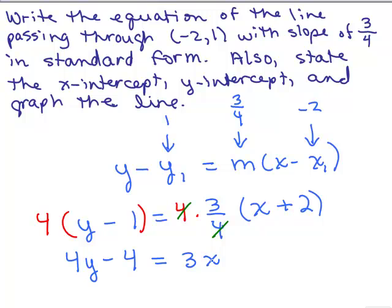If you have fractions, what you can do is multiply by the least common denominator first, and then you won't have any fractions. Now, I'm trying to put this in standard form, so I'm going to put the x and y terms on the left-hand side, so I'm going to subtract 3x on both sides, giving negative 3x plus 4y.